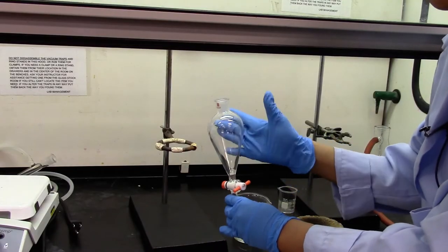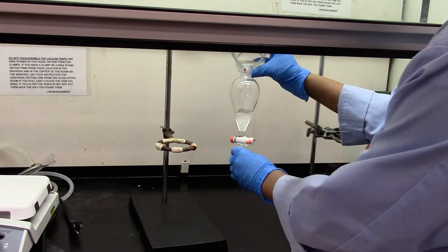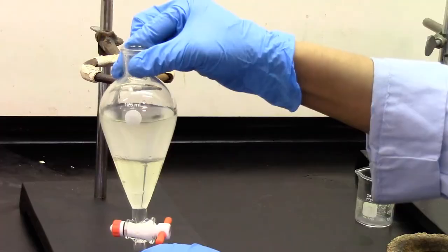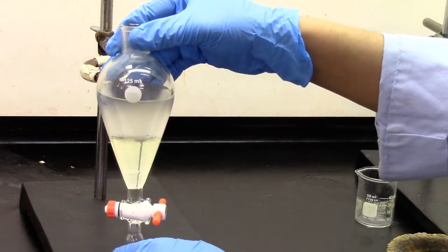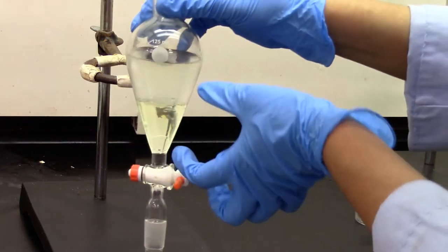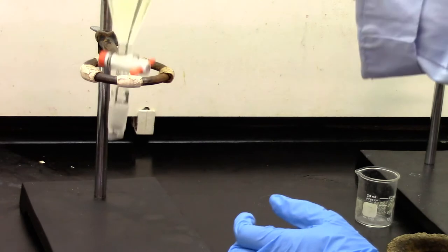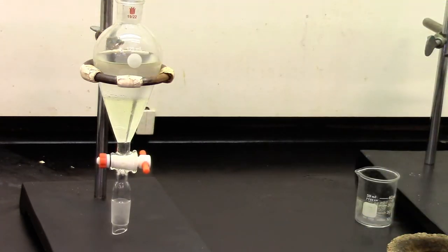Transfer the product into a separatory funnel. We can clearly see two layers. We're going to transfer the bottom layer, which is the dichloromethane layer, into a clean Erlenmeyer flask.